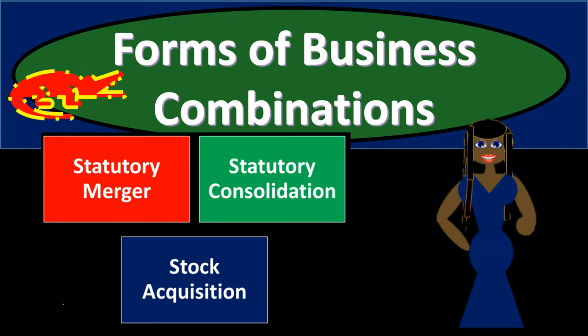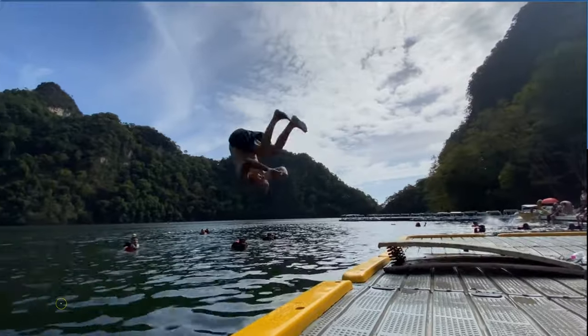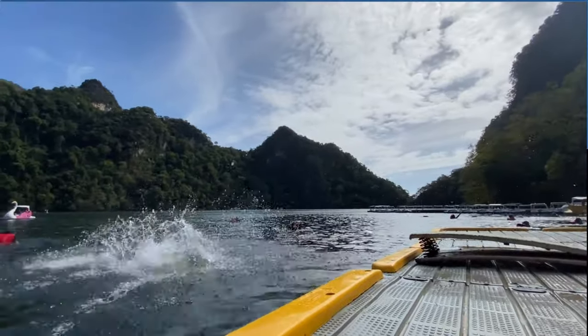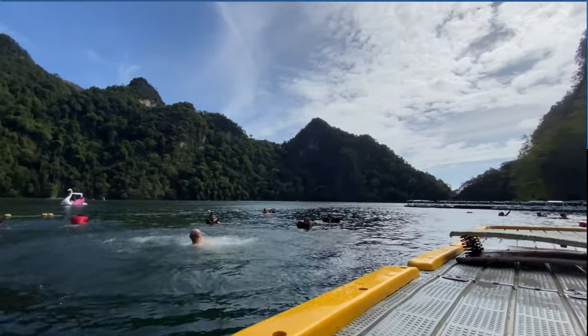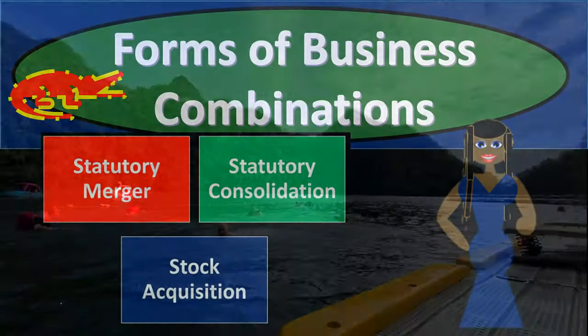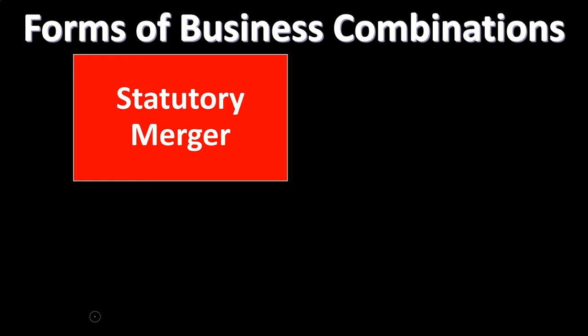In this presentation, we're going to talk about forms of business combinations, which is basically external expansion — two types of entities that are going to be related in some way, shape, or form. Get ready to act because it's time to account with advanced financial accounting. Forms of business combinations.